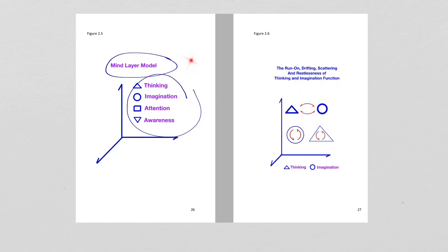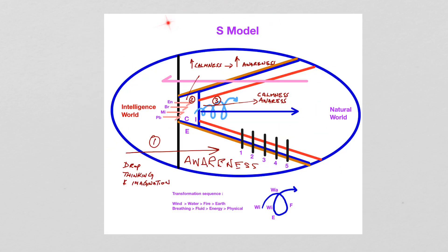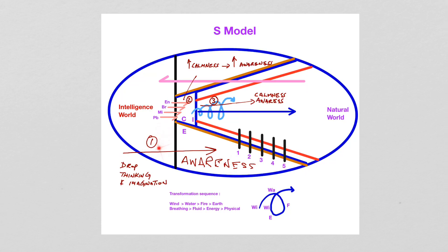This mind layer model is important, because as the S-model says, if you want to enter from the intelligent world into the natural world, the first thing you need is the awareness function. One needs to drop the thinking and imagination functions and use the awareness function of the mind element. That is the ticket for one to get from the intelligent world into the natural world.